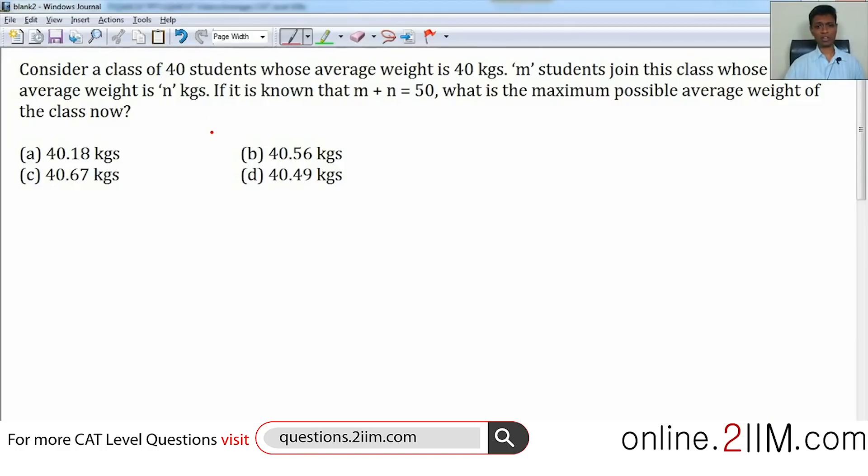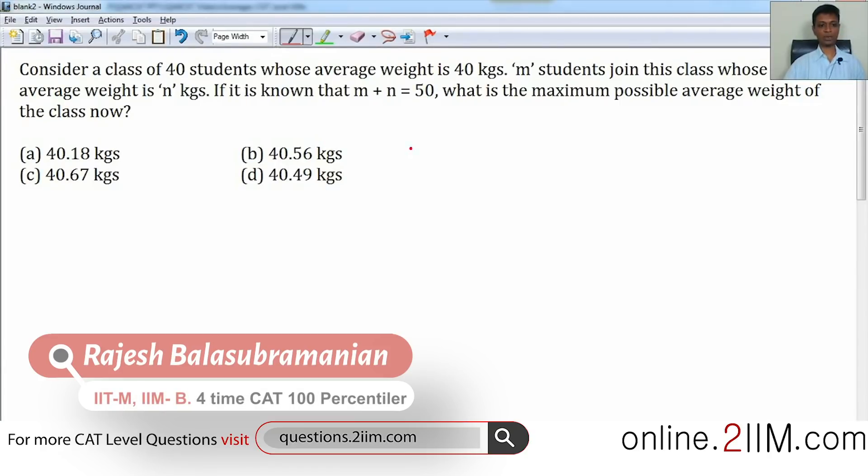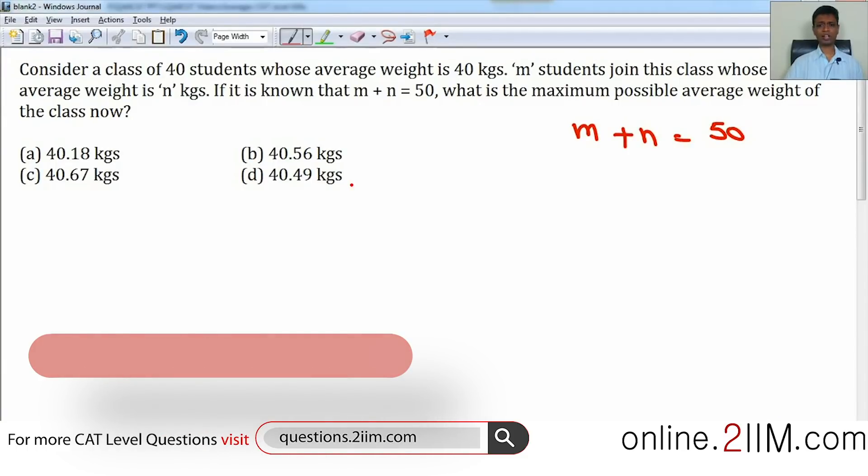A class of 40 students whose average weight is 40 kilograms. M students join this class whose average weight is n kilograms. We know further that m plus n equals 50 students coming in, bringing in some kilograms each with them on an average. What is the maximum possible average weight of the class now?